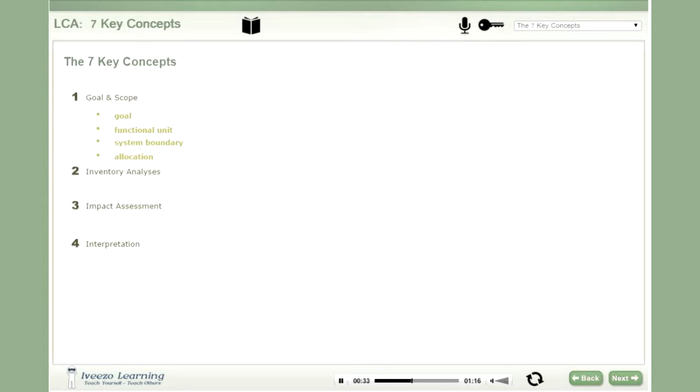Within the inventory analysis phase, several types of life cycle inventory (LCI) data is collected. Selecting an impact assessment method is the next critical concept to understand, followed by critical review in the interpretation phase.